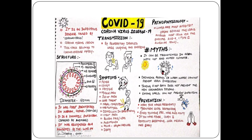The diameter of coronavirus is 120 nanometres. It was first identified in Wuhan, China in November or December 2019, which is why it is named COVID-19. It is a zoonotic infection — spread by animals. It was recognized as a pandemic by the World Health Organization in March 2020.